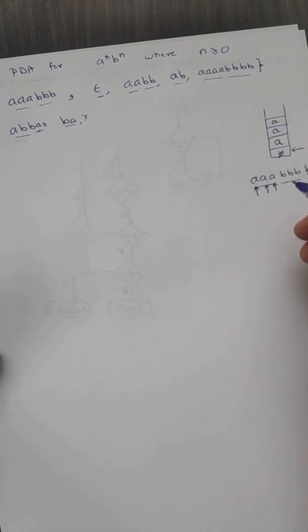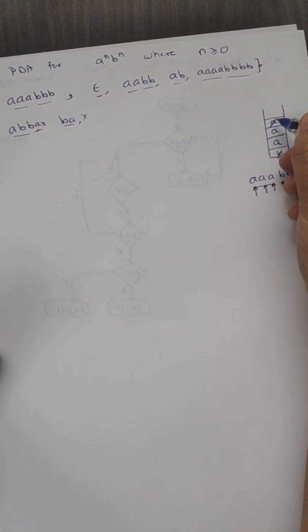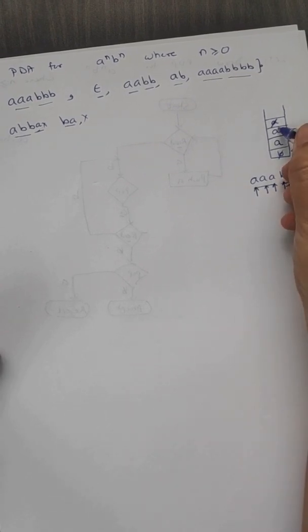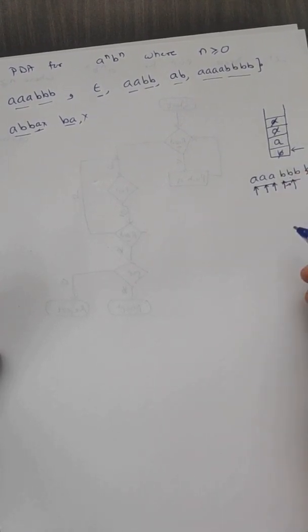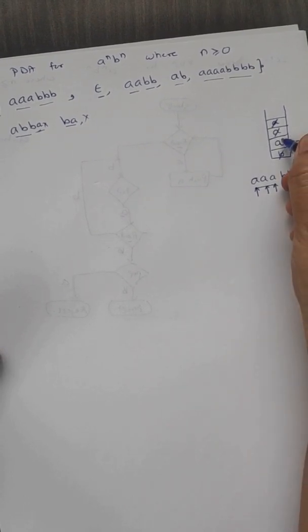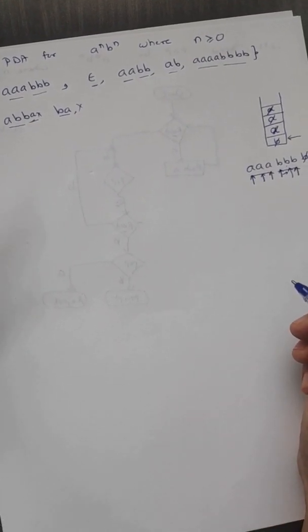The moment we get the first b, that means we are no longer receiving a's — we will only receive b's. So for the first b we pop the topmost a from the stack. Then for the second b we again pop the symbol from the stack, which should be an a. For the third b we pop the next symbol from the stack and check whether it is an a or not, and if it is an a we continue.